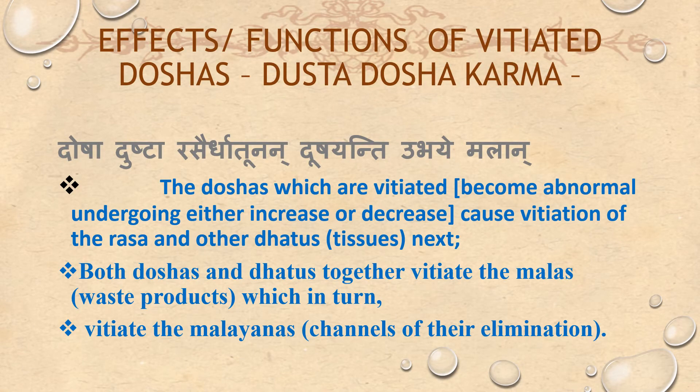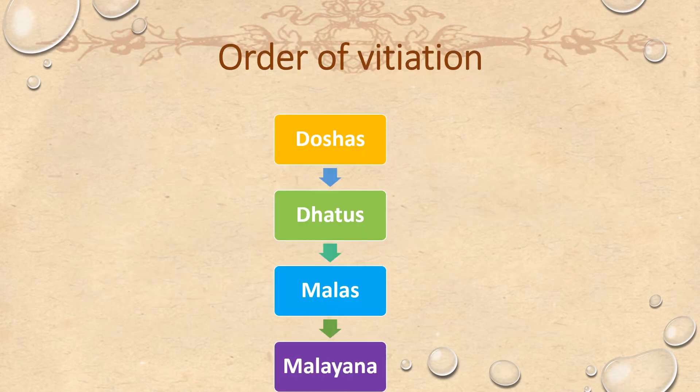Effects of functions of vitiated Doshas — Dushta Doshakarma. Doshas which are vitiated — that is, become abnormal by undergoing either increase or decrease — cause vitiation of the Rasa and other Dhatus. Both Doshas and Dhatus together vitiate the Malas, which in turn vitiate the Malayanas (channels of their elimination). That is the order of vitiation.